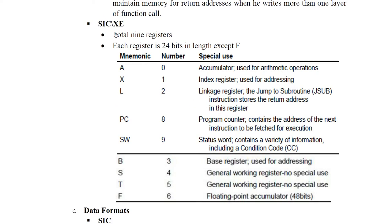For SIC-XE, it already has SIC's 5 registers plus 4 additional registers. The additional registers are B, S, T, and F. B is the base register, used to store a base address. S and T are general purpose registers used to store temporary data. F is the floating point register, used to keep floating point numbers.